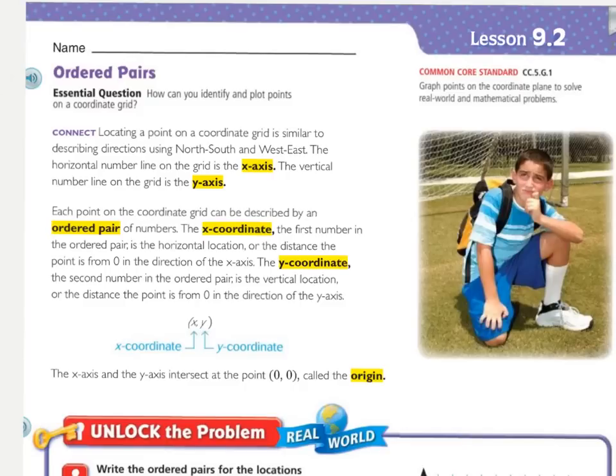For our lesson today, we need to know quite a few vocabulary terms. Let's look at the connect. Locating a point on a coordinate grid is similar to describing directions using north-south and east-west. The horizontal line on the grid is the x-axis. If we have a grid here, that means that this bottom one is the x-axis. And the vertical line on the grid is the y-axis, so the one going up and down is the y.